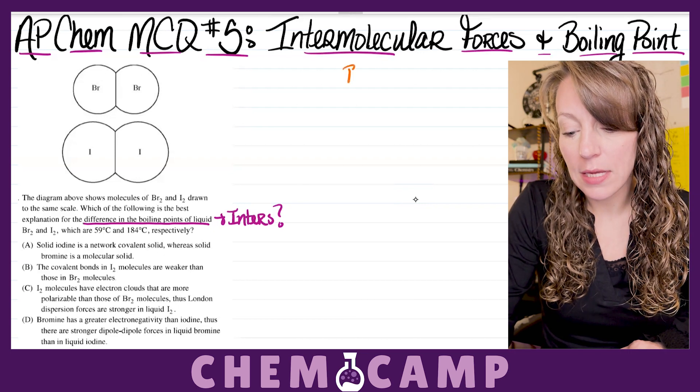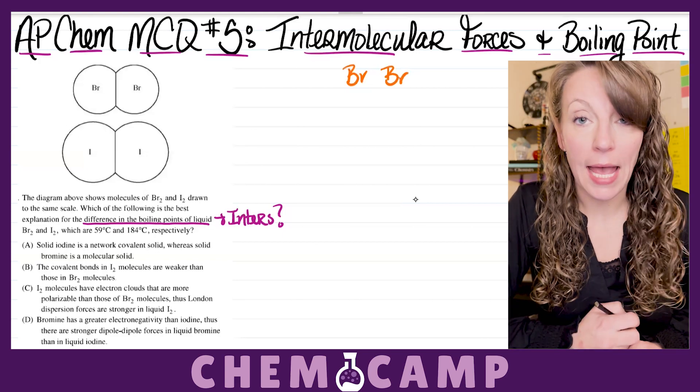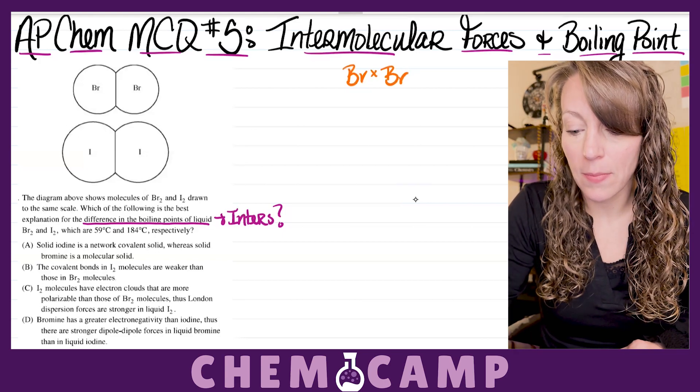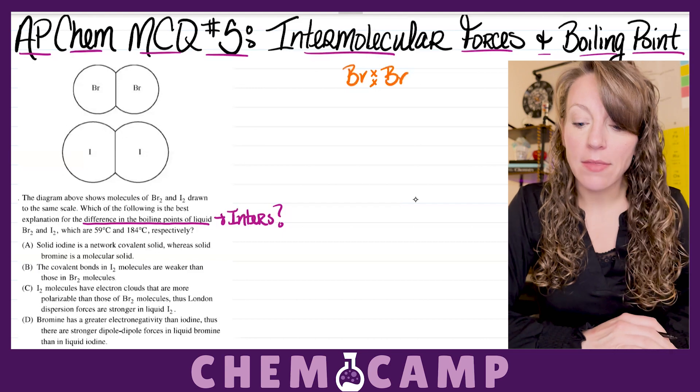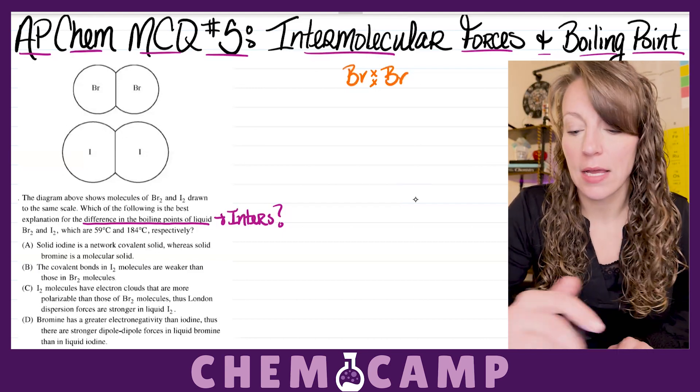So, if we take a look at Br2, you've got two bromine atoms bonded to each other, and then they're each going to be surrounded by three lone pairs of electrons.